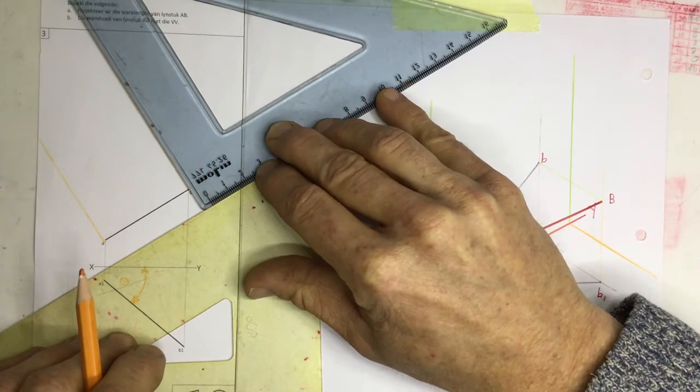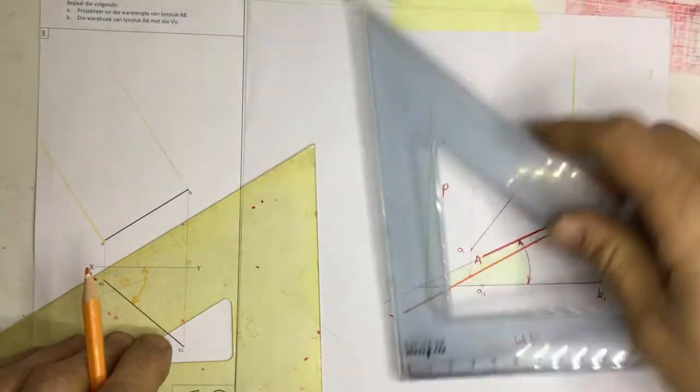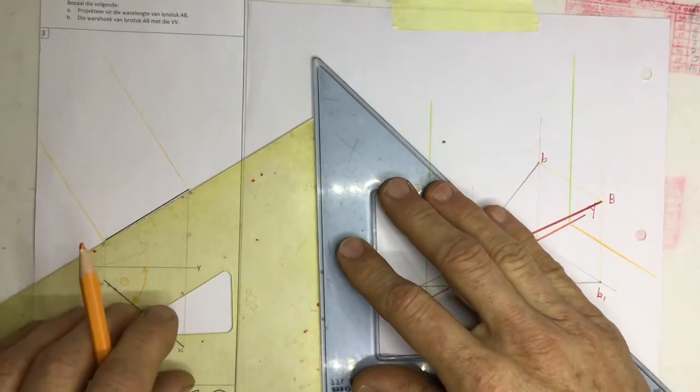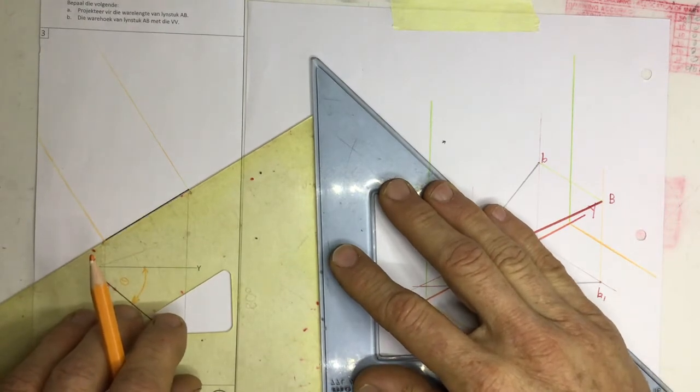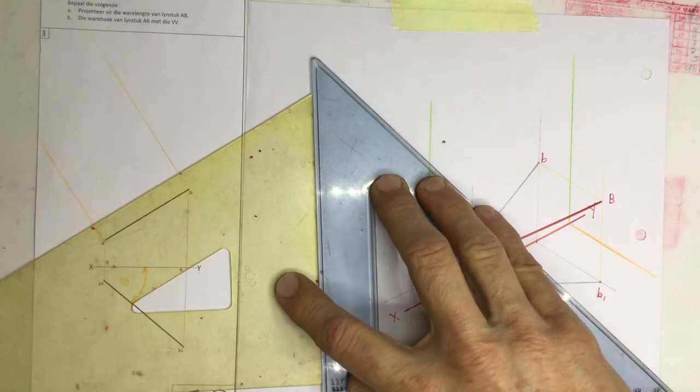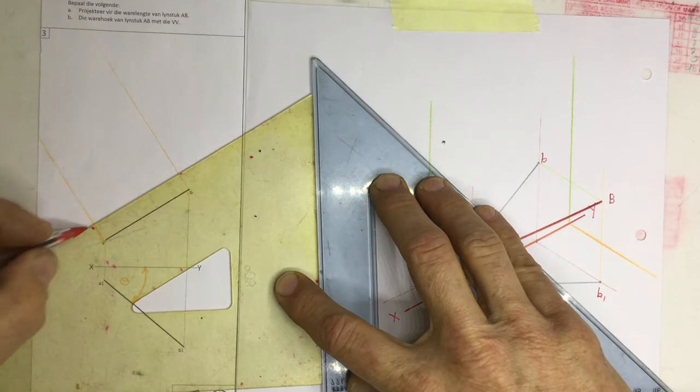And then you can also take your set square back over there. Line that up again on that line. Work very accurately here. Drag that out. Draw a new XY axis.